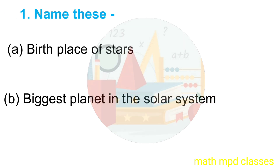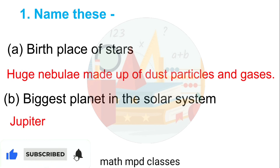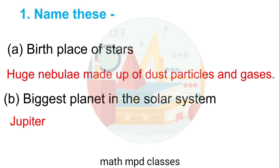Name these. First, birthplace of stars — Answer: Huge nebula made up of dust particles and gases. B. Biggest planet in solar system — Answer: Jupiter.